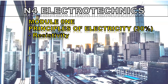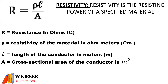Welcome to N4 Electro-Techniques. In this video we'll be looking at resistivity and resistance. Resistivity is defined as the resisting power of a specified material. To calculate resistance, it is the resistivity measured in ohm-meters multiplied by the length of the conductor in meters, divided by the cross-sectional area of the conductor in meters squared.